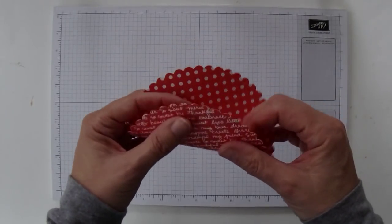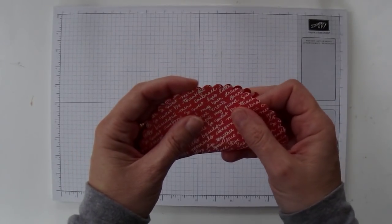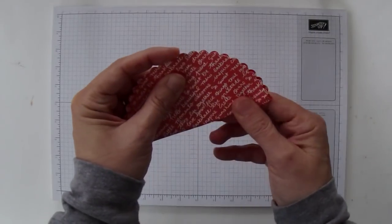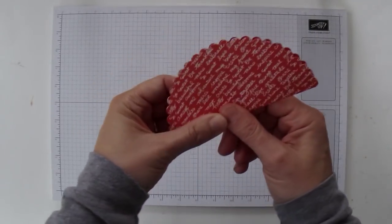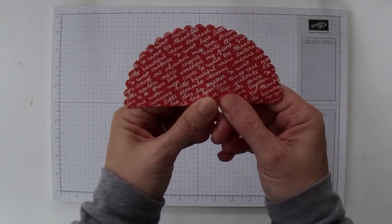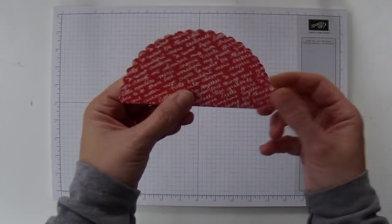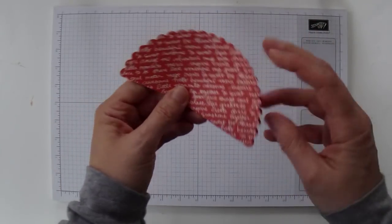Now I like to have the pattern that I'm going to use on the outside when I do my folding, but later on you still have an opportunity to switch that up. And then you're going to fold this piece in half again.